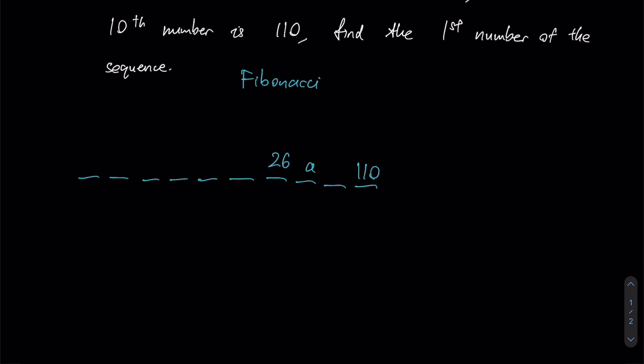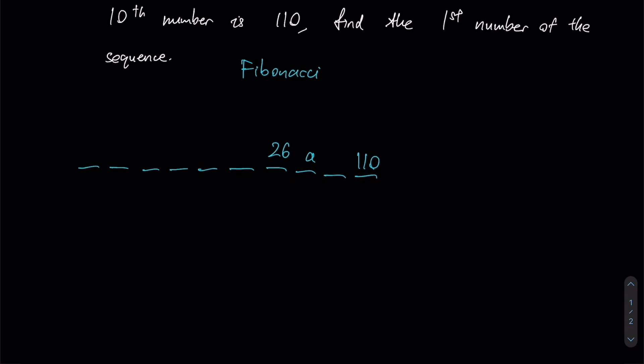If the eighth number would be a, notice that my ninth number must be the sum of my seventh and eighth number, which would therefore be 26 plus a. And if this was 26 plus a, then the sum of a plus 26 plus a must then give us my next number, which is 110.